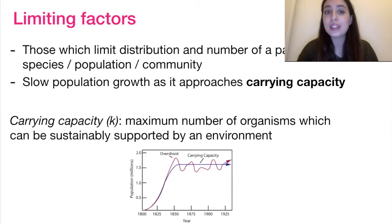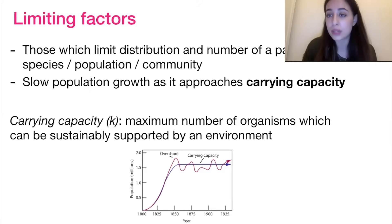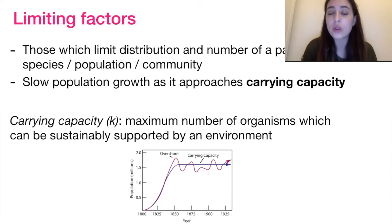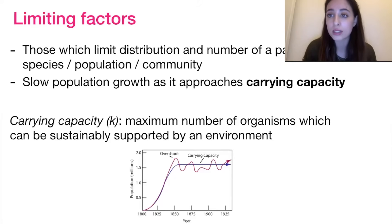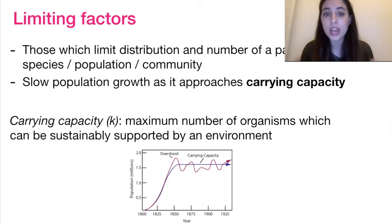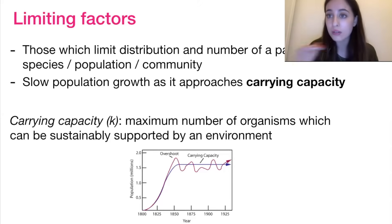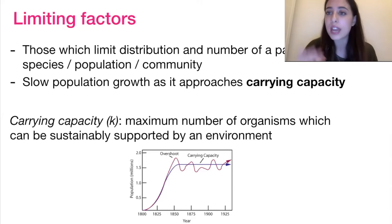A limiting factor is one which limits the distribution and number of a particular population or species. Typically, the rate of population growth will slow as a population approaches its carrying capacity — which is the maximum number of organisms an environment can sustainably support. As shown in the graph, there can be slight overshoots and die-backs around the carrying capacity, but because of negative feedback mechanisms, the population stays around this equilibrium.